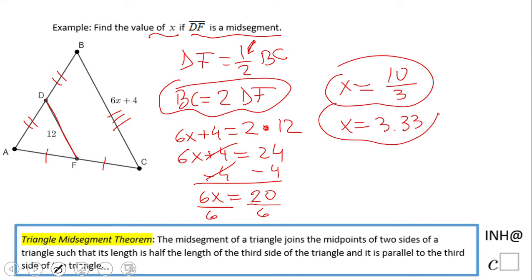If you need to find BC, that is very simple. This will be twice that, which is 24. You can plug in 10 over 3 and you'll see you should get 24.